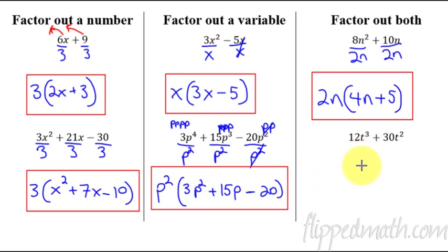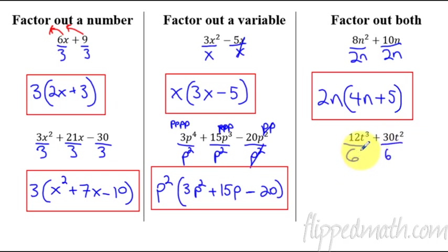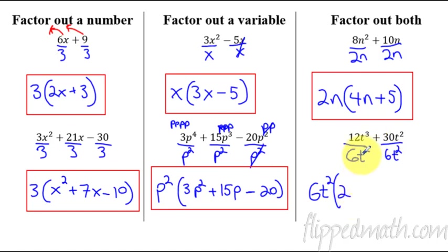Last factoring example: 12t³ + 30t². What goes into both 12 and 30? Not 12 — 12 doesn't go into 30. How about 6? Yes, 6 goes into both. For the t's: three t's here, two t's there — the most we can divide out is t squared. So we factor out 6t². Simplifying: 12 ÷ 6 = 2, t³ ÷ t² = t. Then 30 ÷ 6 = 5, t² ÷ t² cancels. The answer is 6t²(2t + 5).